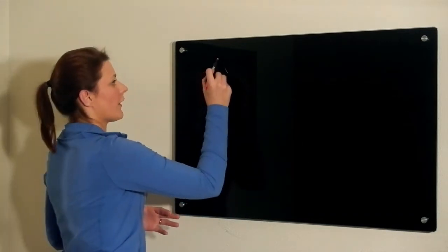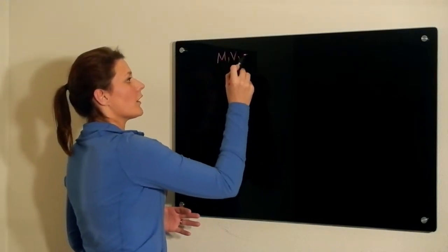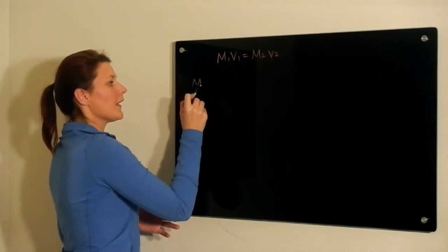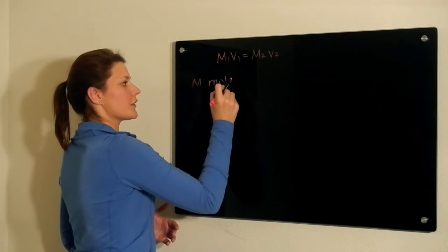Whenever you're dealing with a dilution problem, you are always able to use the formula M1V1 equals M2V2, where M in both cases represents the molarity of the solution.